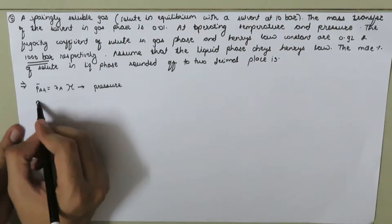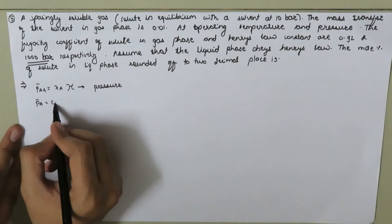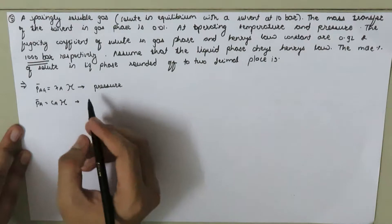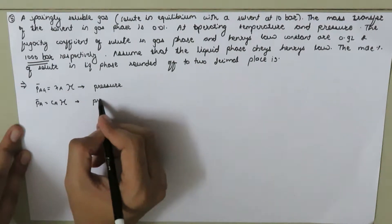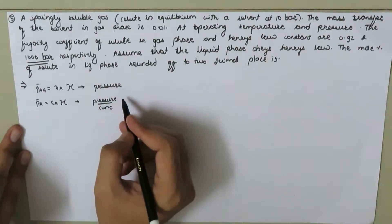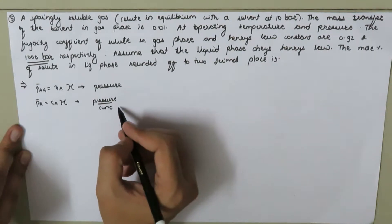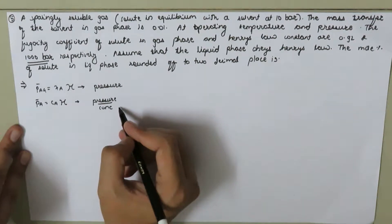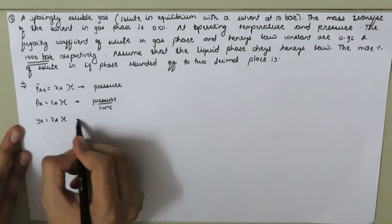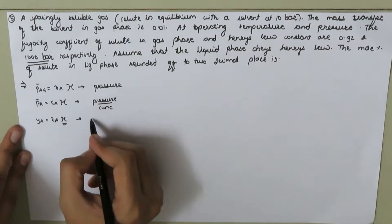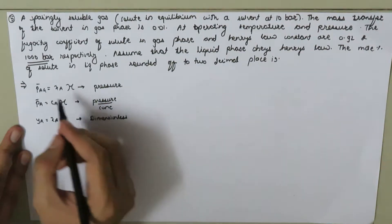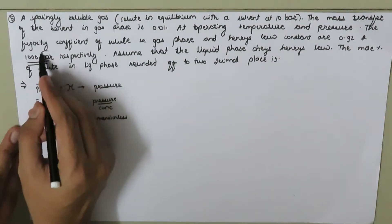In the second case, the partial pressure can be written as the concentration of A times the Henry's constant, where the dimensions of the Henry's constant are pressure over concentration — for example, bar over kmol per meter cubed. A third form is y equals x_A times H, where the Henry's constant is dimensionless.